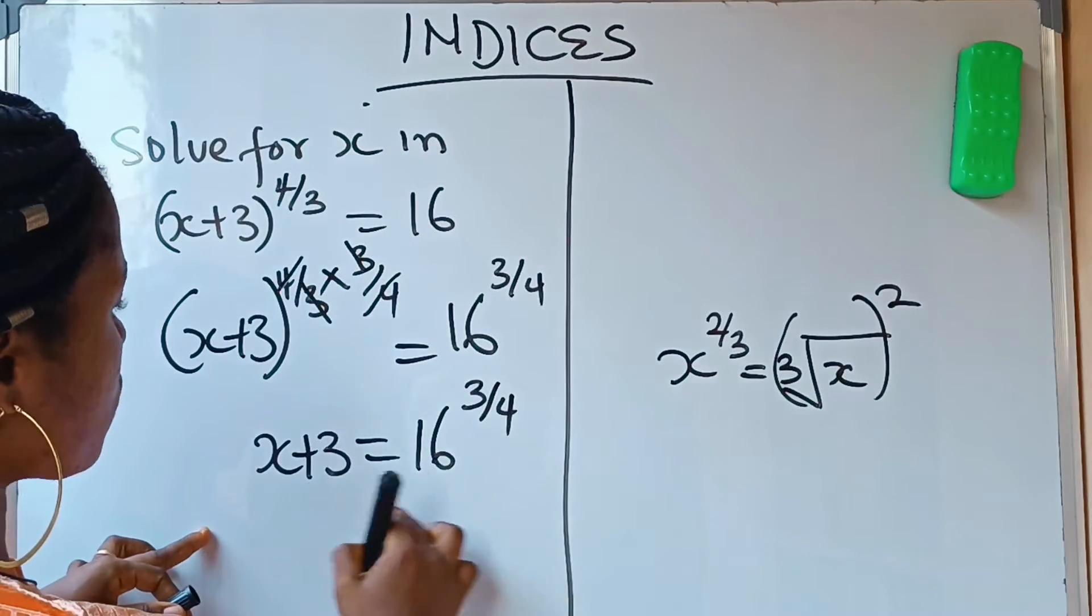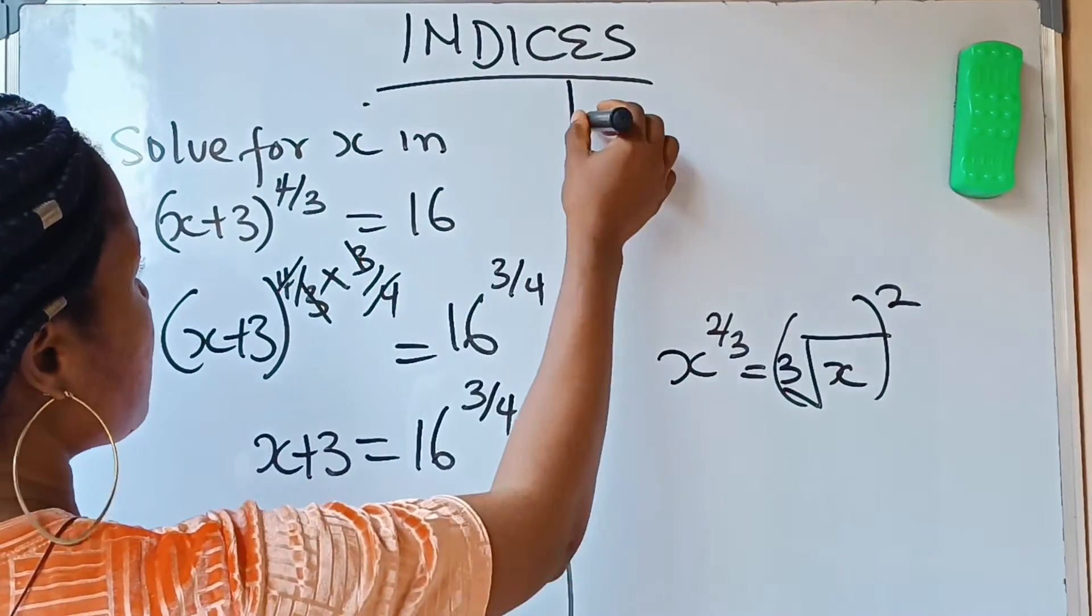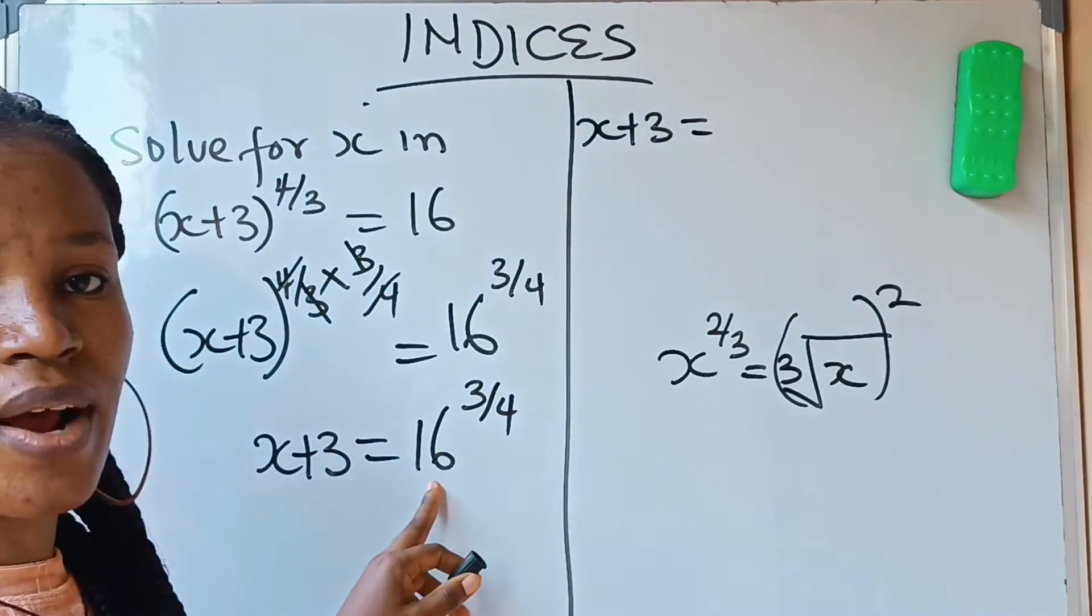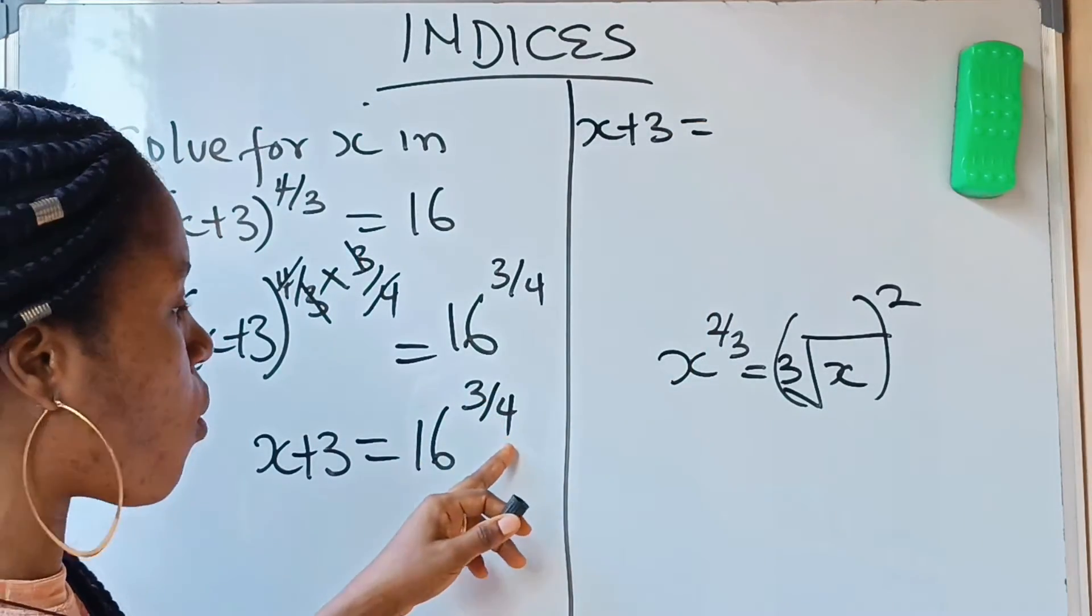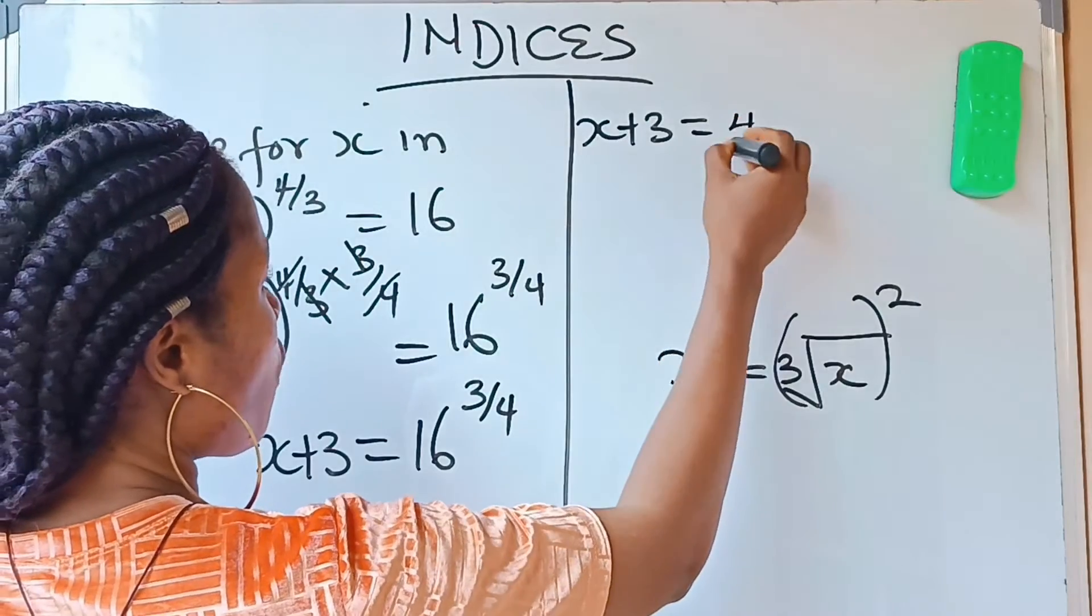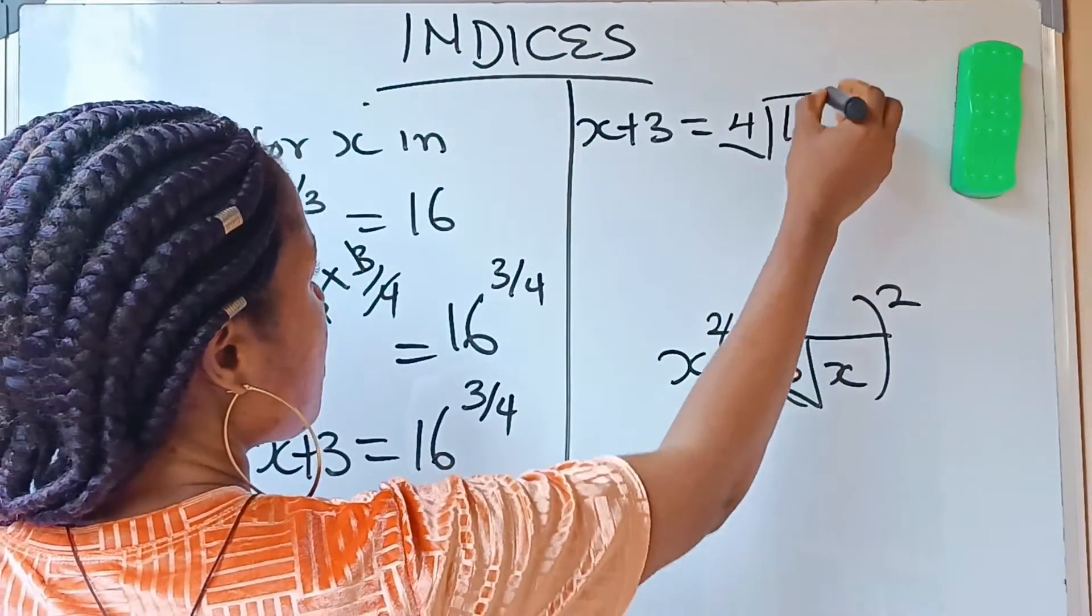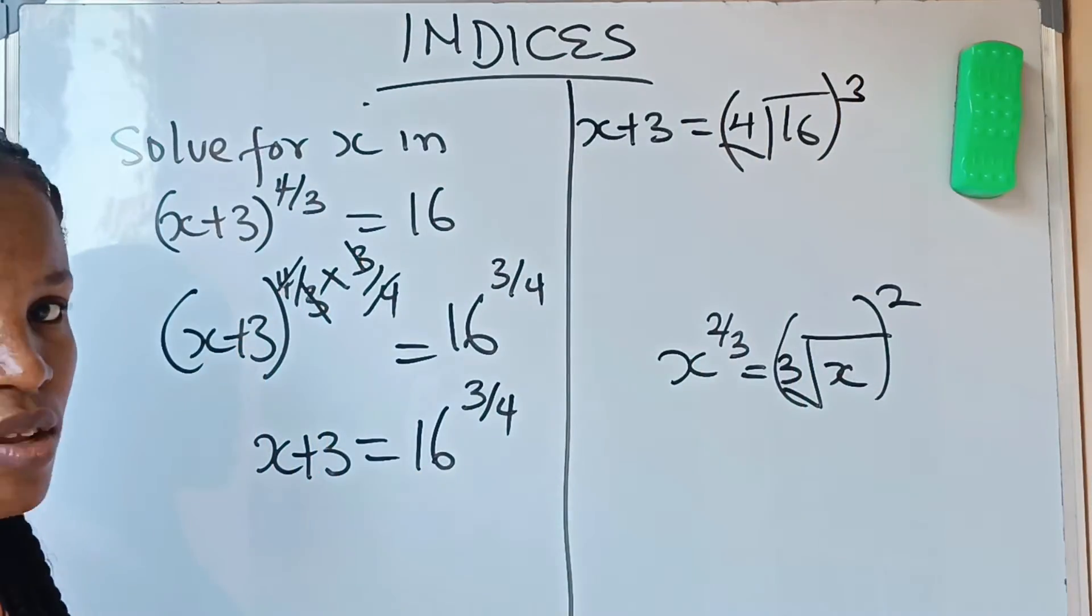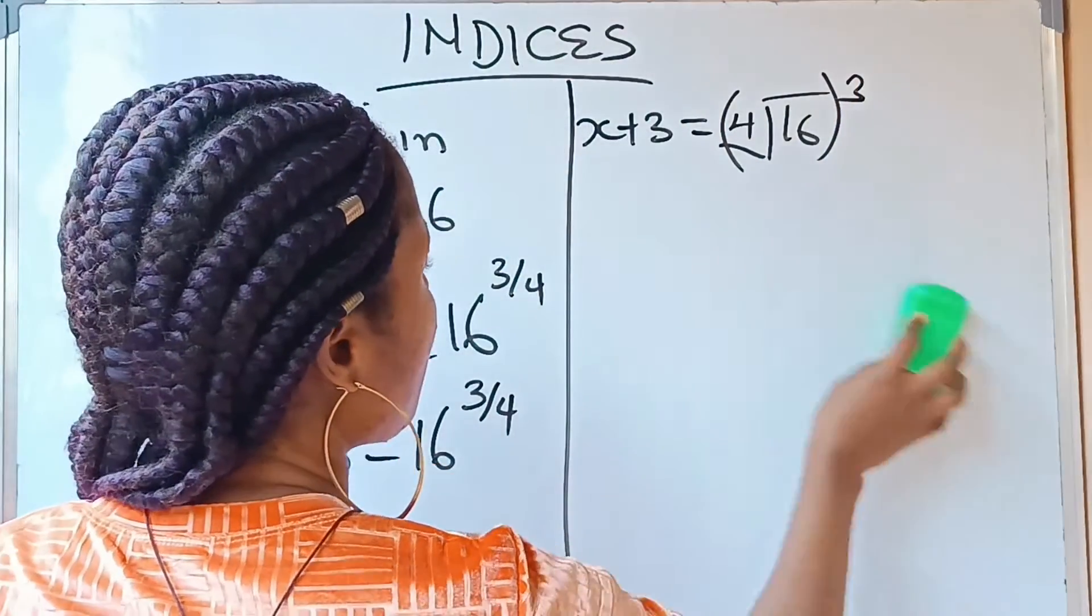We are going to write that x+3 equals, if I write 16 raised to the power 3/4, I'm going to write the fourth root of 16 raised to the power 3. Do you understand?